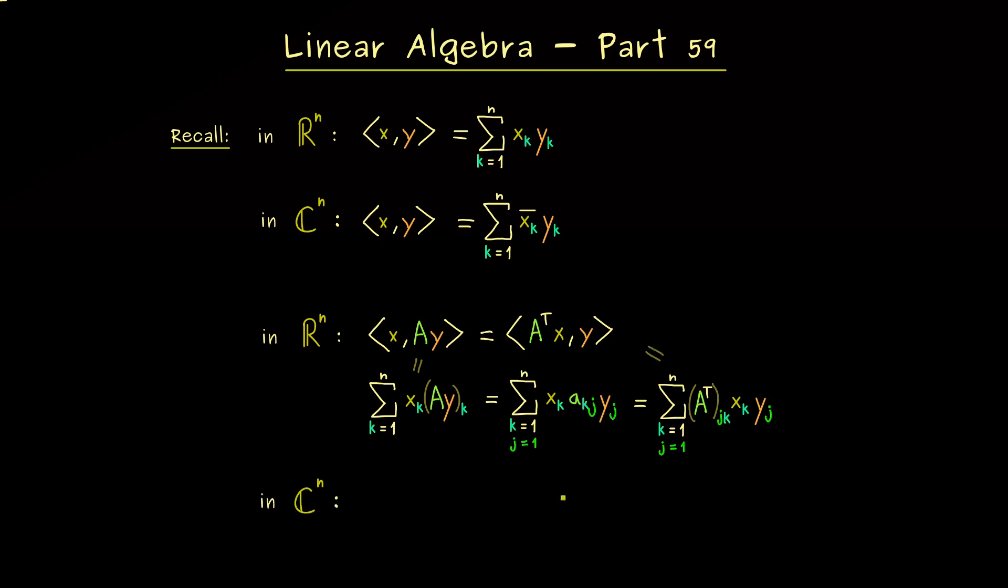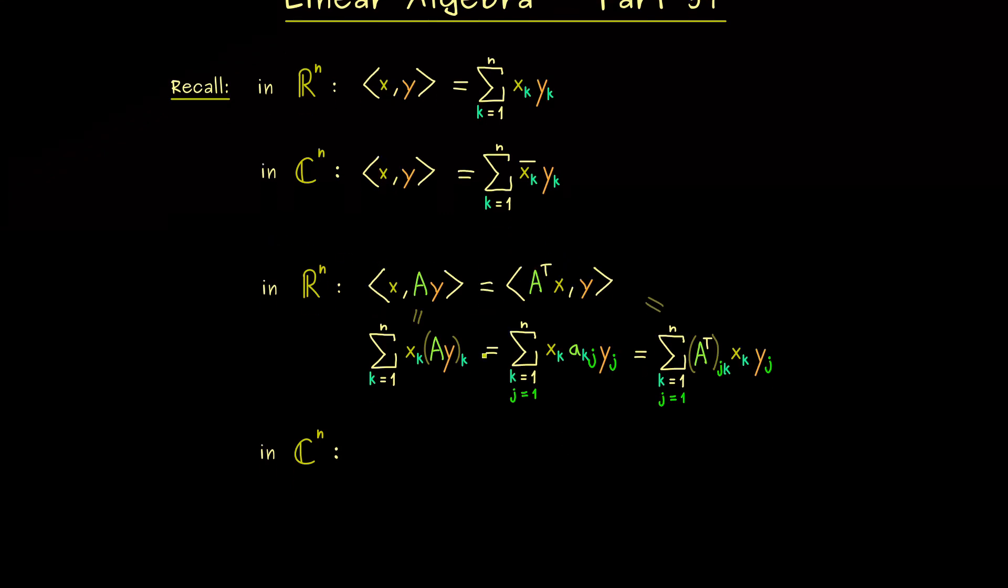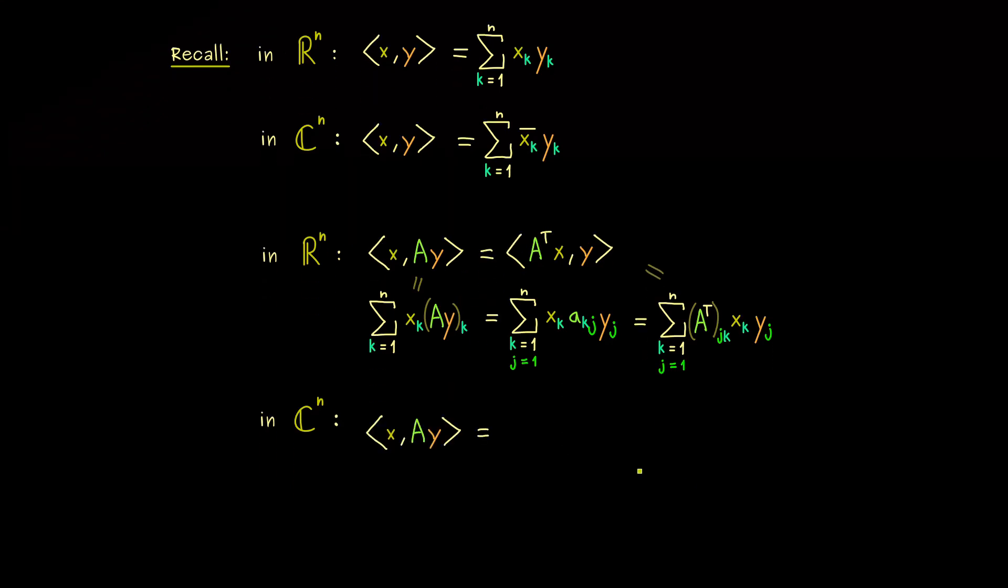Okay, and now the natural question is of course, can we do the same in C^n now? And obviously this should not be a problem, because we can write down a similar calculation as before. The only difference here is that now the components of x have a complex conjugation. And we immediately see that does not change anything with the matrix vector product with the vector y here.